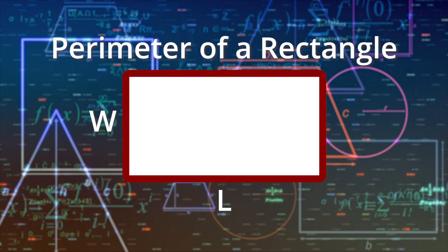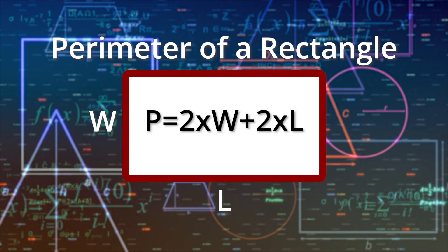The straightforward formula for finding the perimeter of a rectangle is to take 2 times the width and add it to 2 times the length.